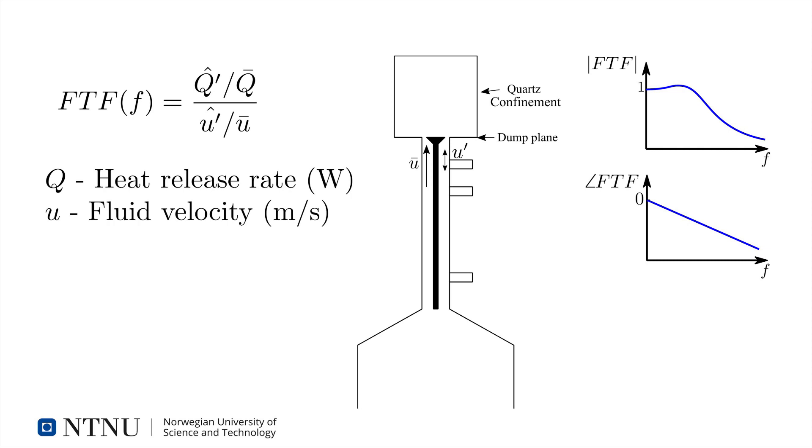The prime symbols represent fluctuations around the mean. The hats denote that the variable is complex, and therefore contains both the amplitude and relative phase of fluctuations. The barred variables are mean values, so the magnitude of the numerator is the amplitude of the fluctuations in the heat release rate as a fraction of the mean. The denominator is the same thing, but for the velocity.